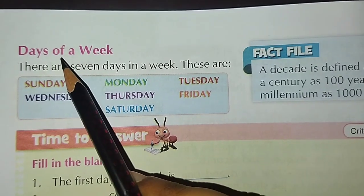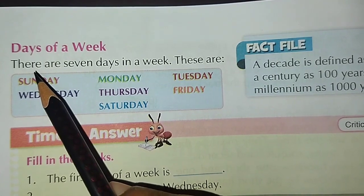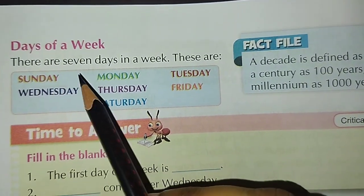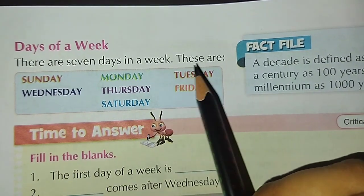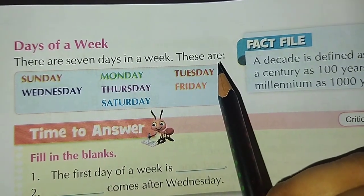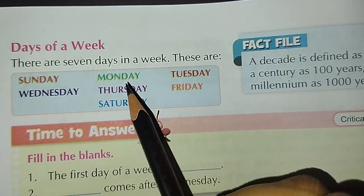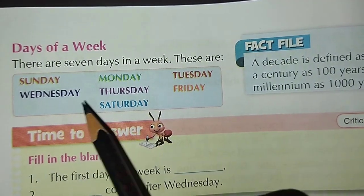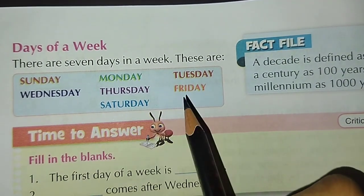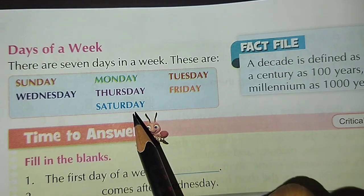Days of a week. There are seven days in a week. These are Sunday, Monday, Tuesday, Wednesday, Thursday, Friday, Saturday.